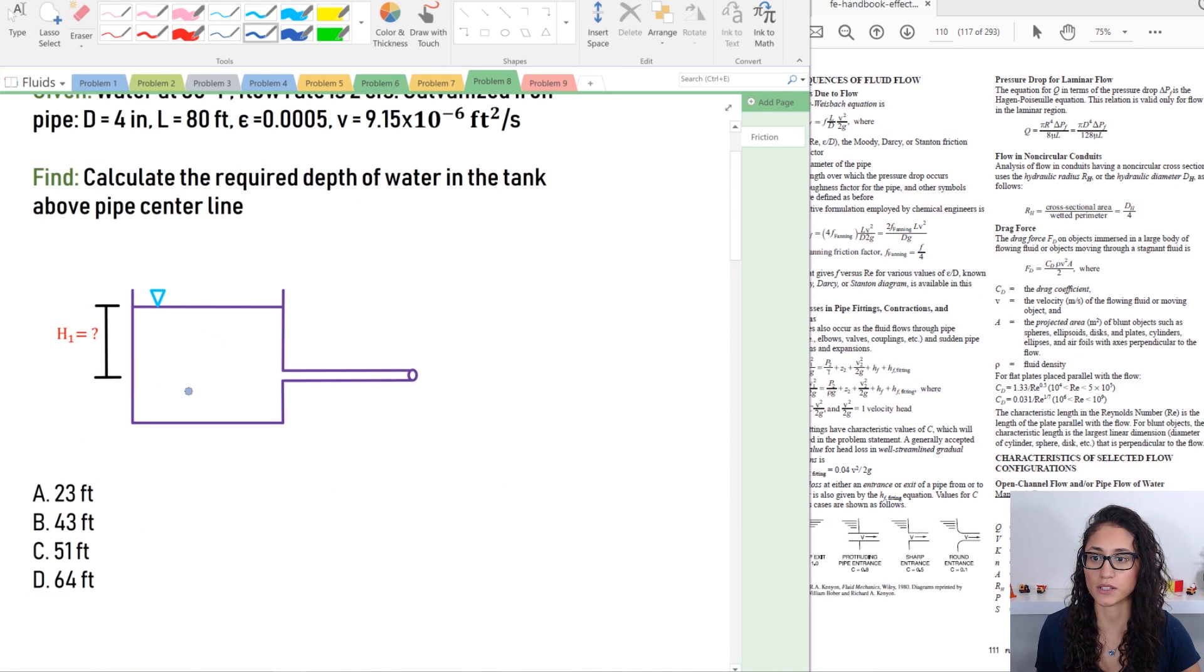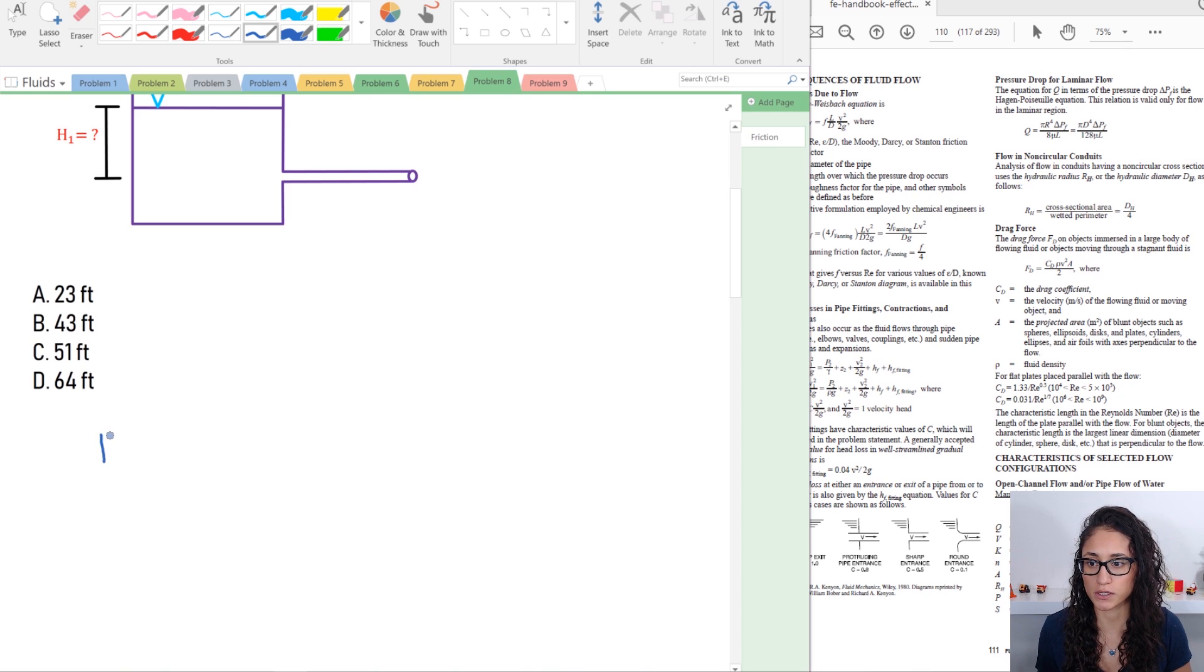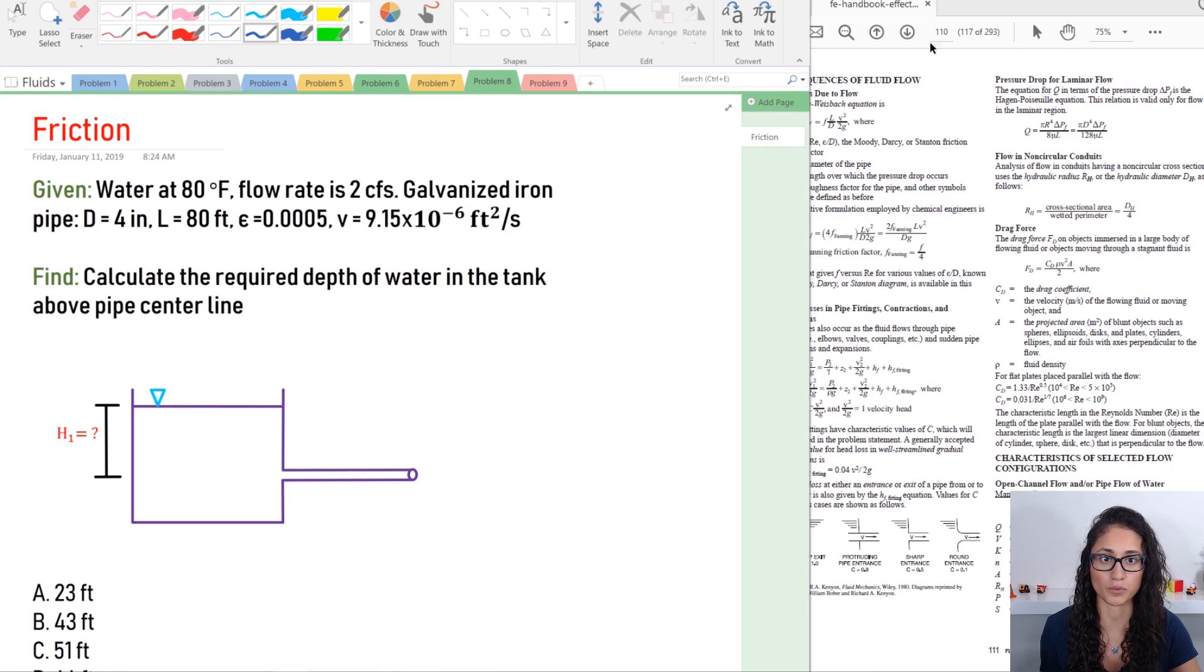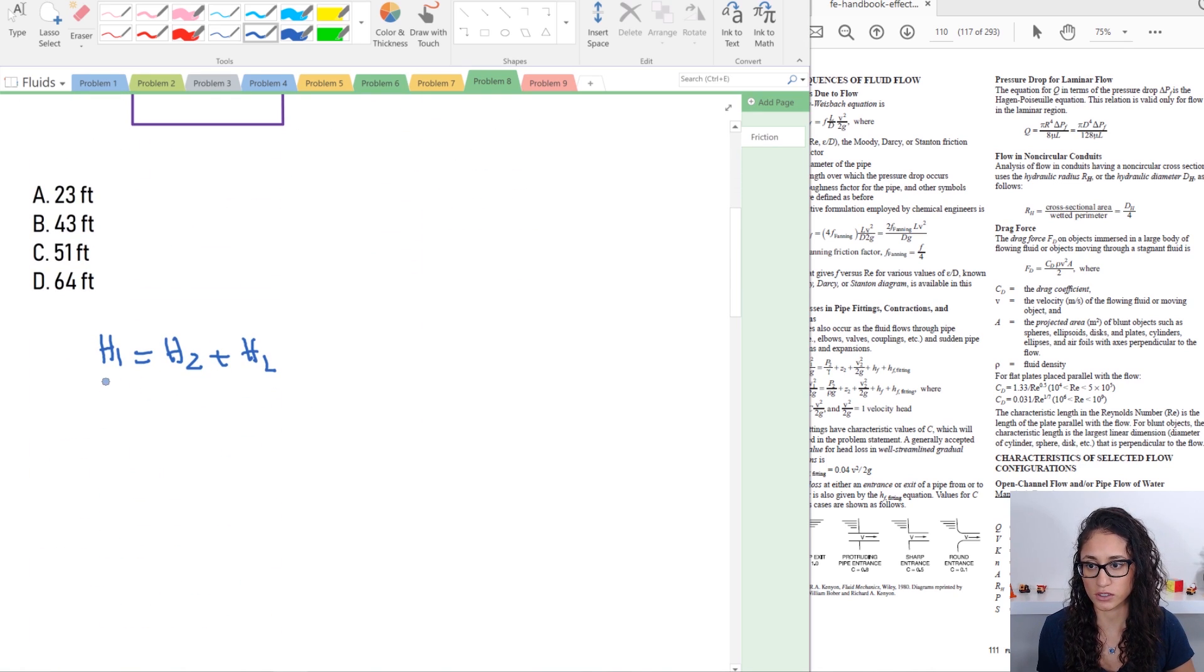The first thing we're going to do is use the Bernoulli and energy equation. So we have h1 equals h2 plus the head loss. The head loss here - we have loss due to friction and we're going to use Darcy equation which is on page 110 because we were given the viscosity and epsilon. To calculate the head friction, we first need to calculate Reynolds number. If it's less than 2,000 we have laminar flow, but if it's greater than 4,000 we have turbulent flow. If it's turbulent, we have to do epsilon over D and use the Moody chart to identify the f factor.